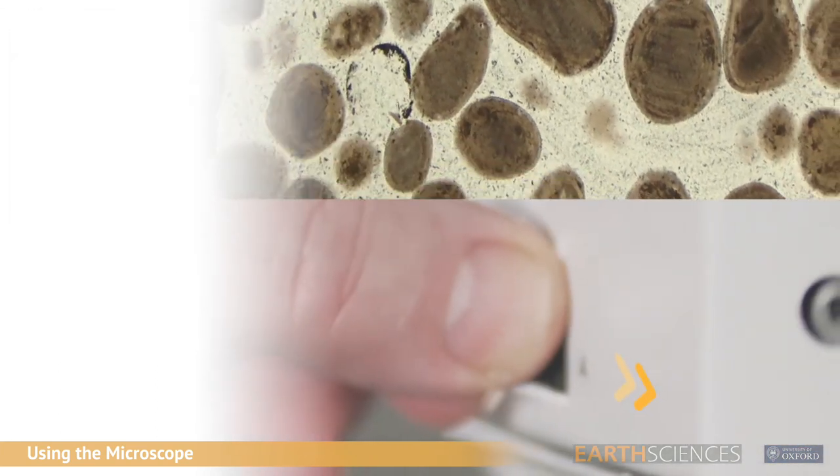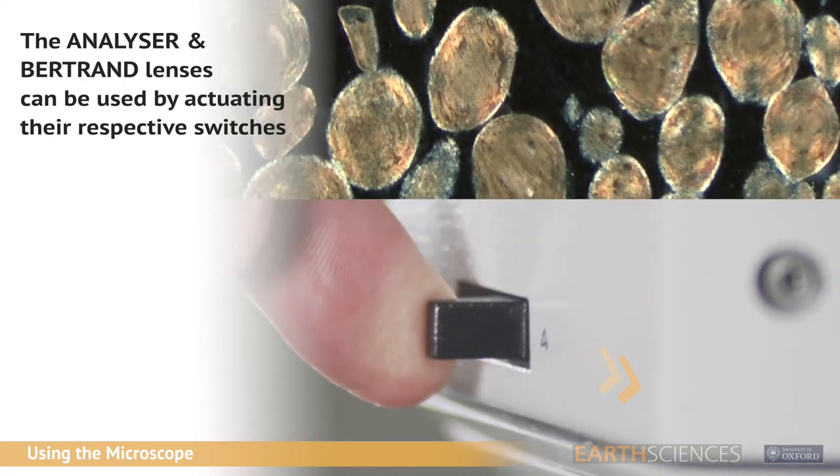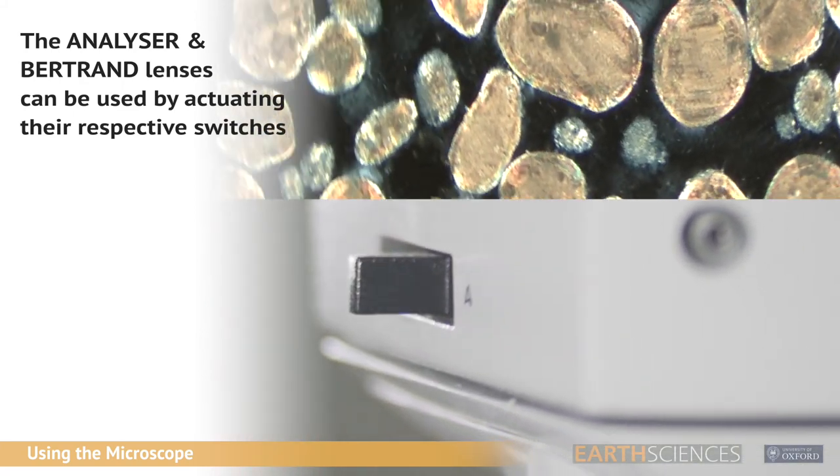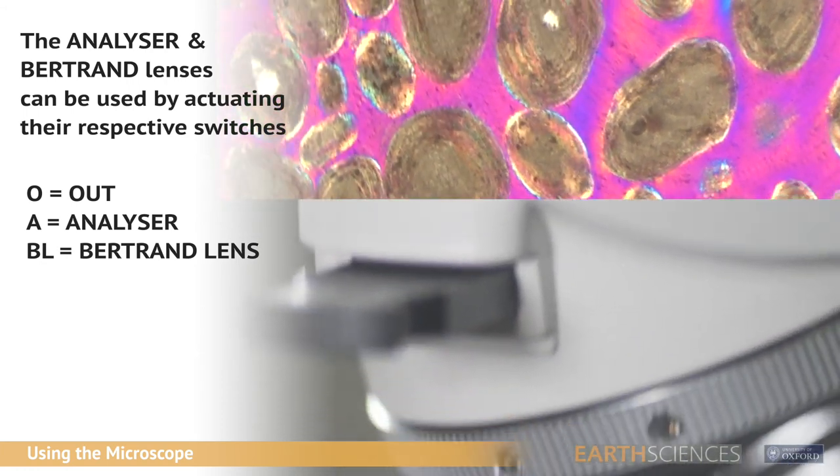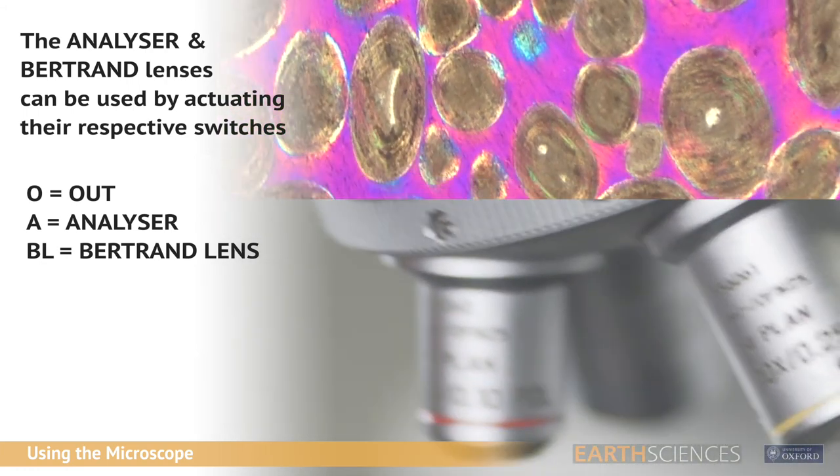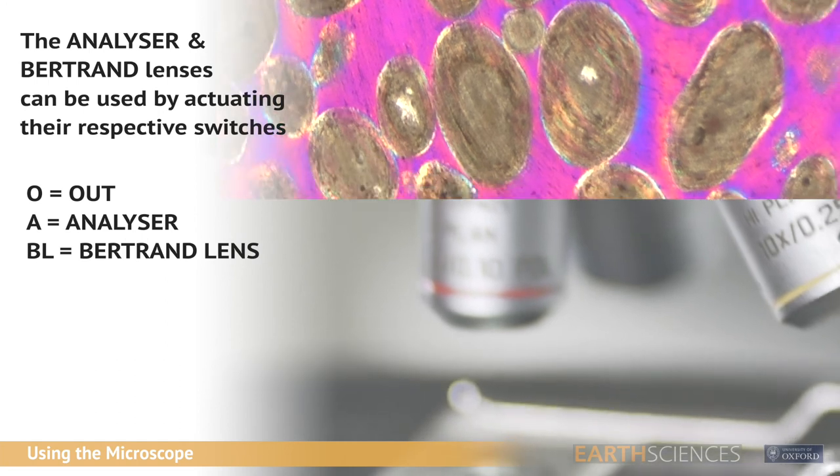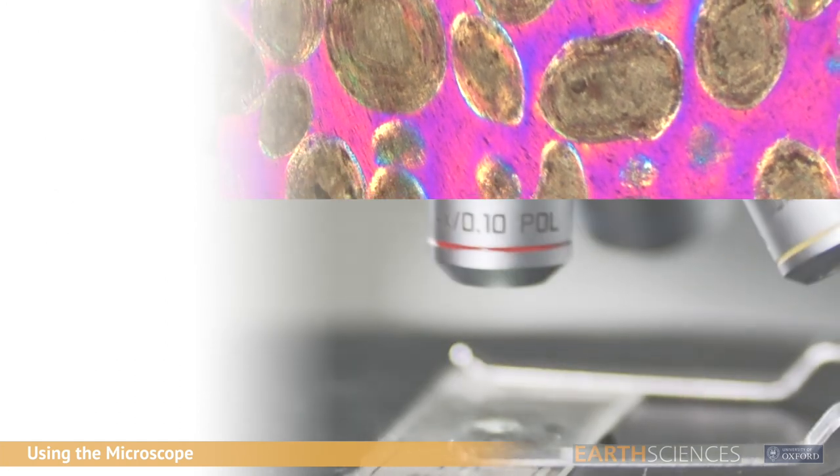Between the binocular viewing tube and objectives is the analyzer and Bertrand lens units. Both are operated by lateral switches. O indicates out and A or BL the in positions. For initial setting up, ensure that both are in the out position.